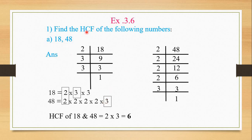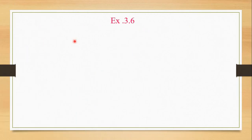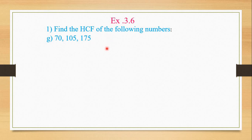I have taken A, and the next explanation will be of question G. The rest will be done by you. Let's begin with Exercise 3.6, question G, where three numbers are there to do the factorization and find the highest common factor. The method is exactly the same as we did in the previous sum.